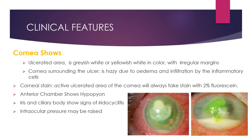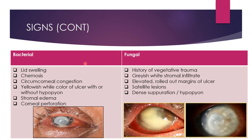On the cornea, you see a lesion that is yellowish-white with irregular margins. The surrounding cornea is hazy due to edema and infiltration by inflammatory cells. The active area of the ulcer takes up fluorescein stain — using 2% fluorescein dye to stain the ulcerated area. The anterior chamber shows hypopion, the iris may be muddy-colored due to associated iritis, and intraocular pressure may or may not be raised. Although exact diagnosis requires laboratory investigations after scraping, certain clinical features help differentiate the etiological agents, such as this typical bacterial ulcer with hypopion.